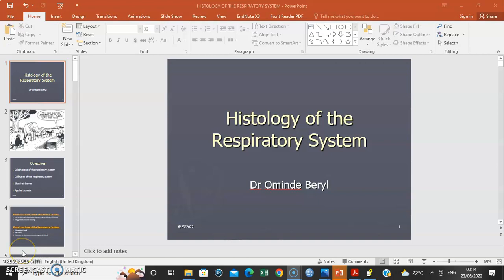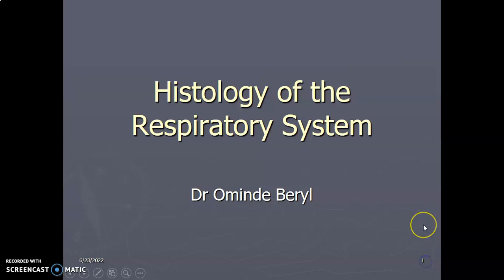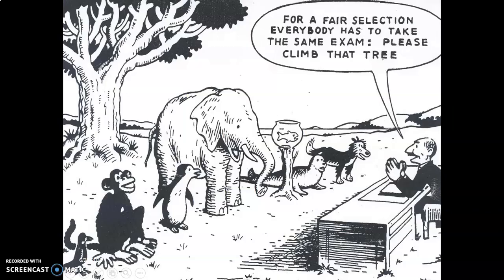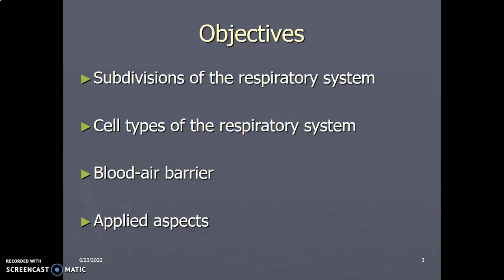It's Ominda. I discuss the histology of the respiratory system. You need to understand that every system has the four tissues in the body: there's an epithelial lining, there's muscle, there's connective tissue, and there's nerve. So there are subdivisions of the respiratory system. There are cells in the respiratory system. You need to understand the blood-air barrier and the applied aspects.